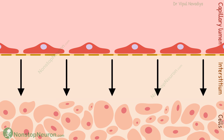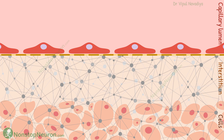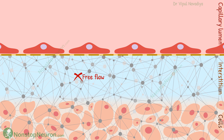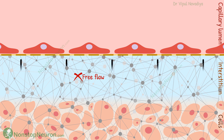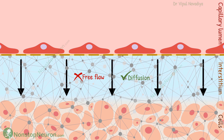Finally, let's see the details of the passage through the interstitium. The interstitium is made up of collagen and proteoglycan filaments with fluid trapped within them. In short, it's a gel-like structure. Because of the large number of filaments, the fluid cannot flow freely as it does in open space in the capillary. Rather, it diffuses through the gel. However, this diffusion is also fast enough, and the cells are not too far anyway. So the passage through interstitium is also pretty fast.